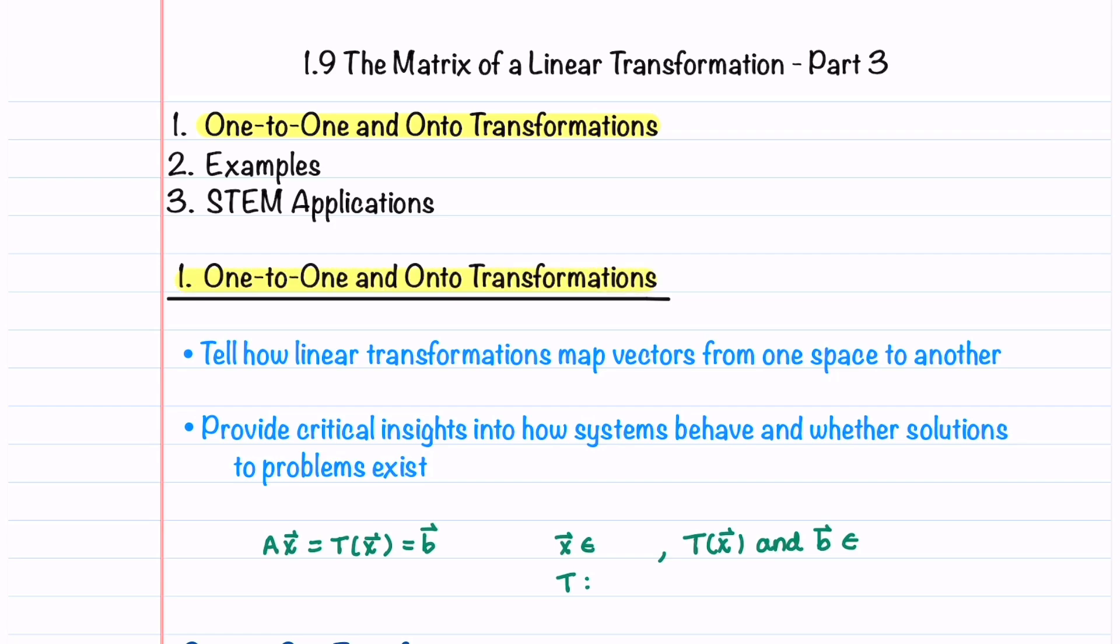One-to-one and onto transformations tell us how linear transformations map vectors from one space to another. They provide critical insights into how systems behave and whether or not solutions to problems exist.